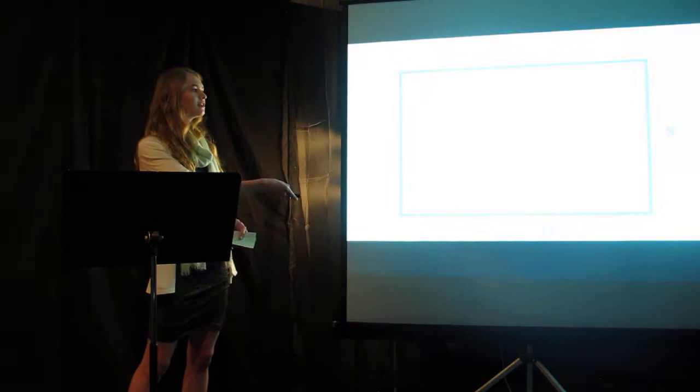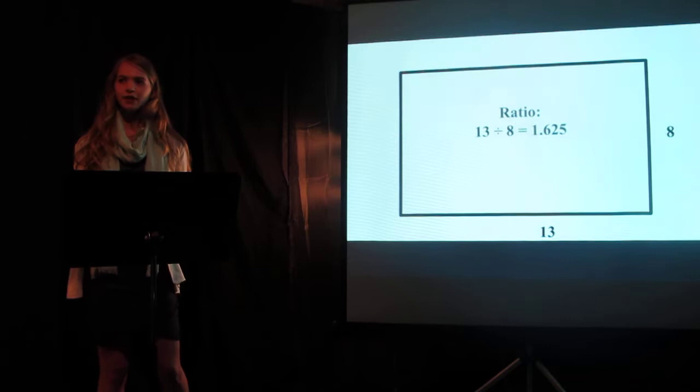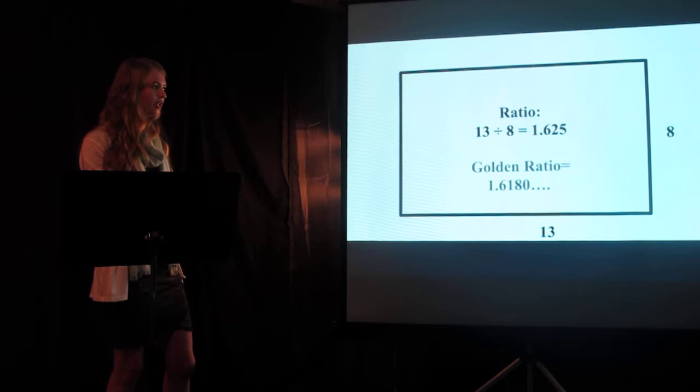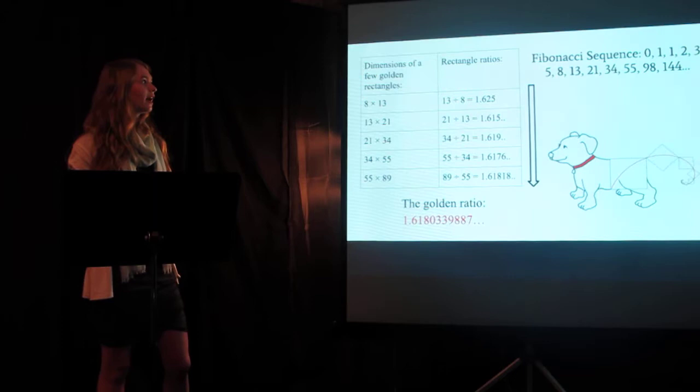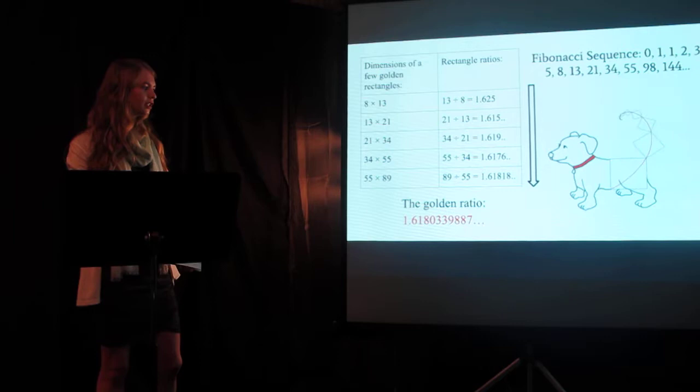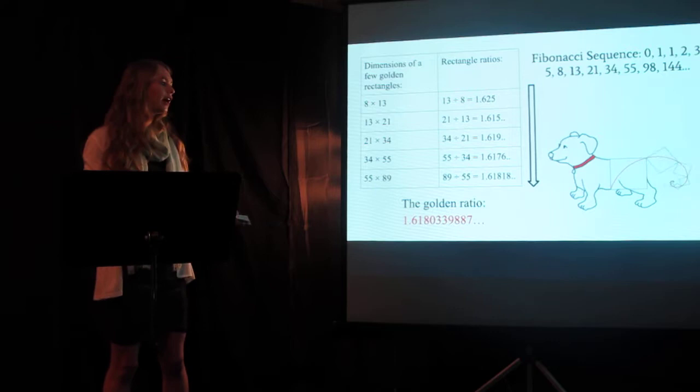By dividing them we can get a ratio of about 1.6. This is commonly referred to as the golden ratio, and a rectangle holding these proportions can be referred to as a golden rectangle. Through this table we can see that as the dimensions of a few golden rectangles increase, the decimal place on their ratios become a more and more precise version of the actual golden ratio. This exact number can also be referred to as phi, the irrational number phi.